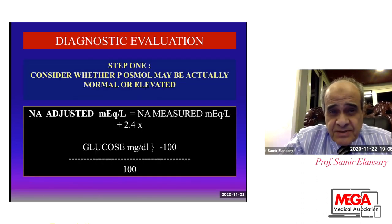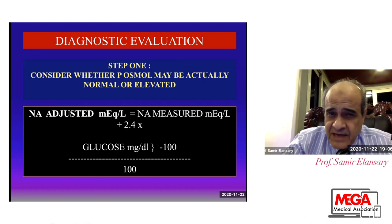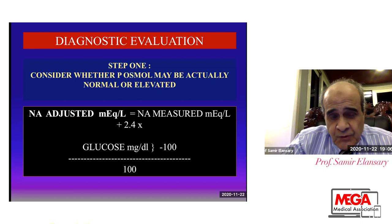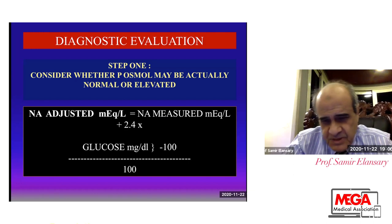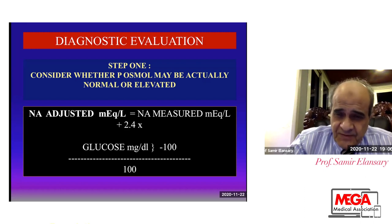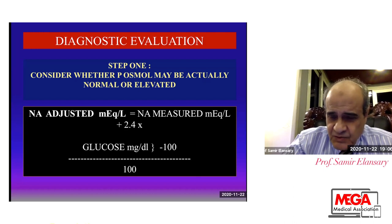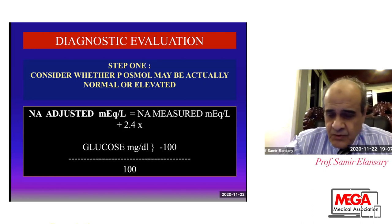Diagnostic evaluation of such patients involves four steps. First step: consider whether the plasma osmolarity may be actually normal or elevated. In such patients it is low, so it is true hyponatremia. If you want to know the actual sodium in such patients, you have to consider correction equations. If blood sugar is high, multiply 2.4 by (glucose mg% minus 100) over 100. In our patient, blood sugar is normal, so no need for correcting sodium.